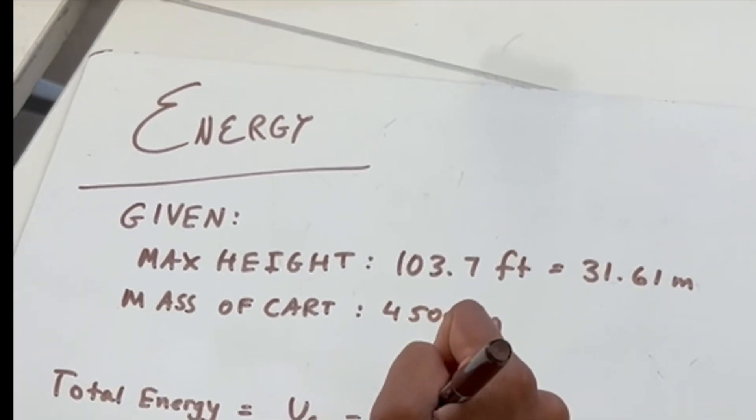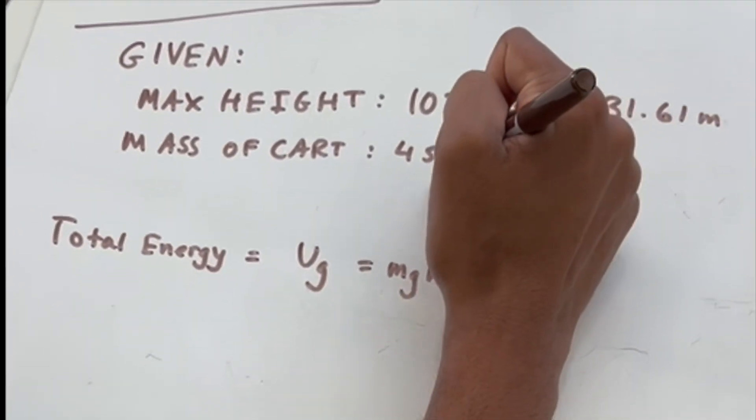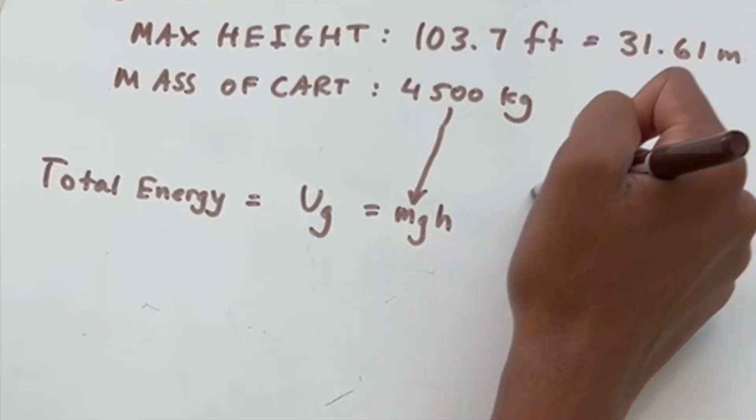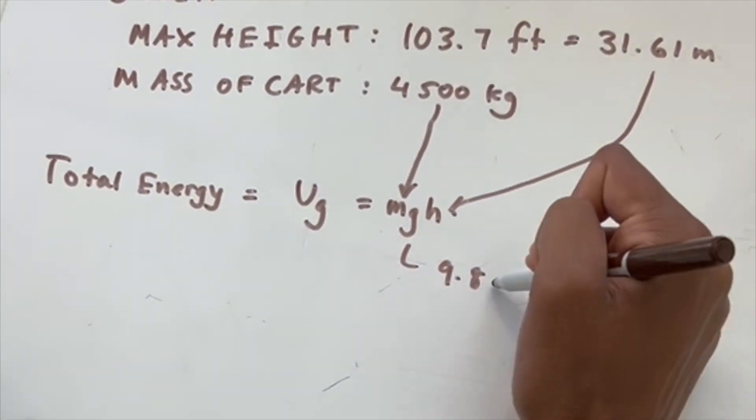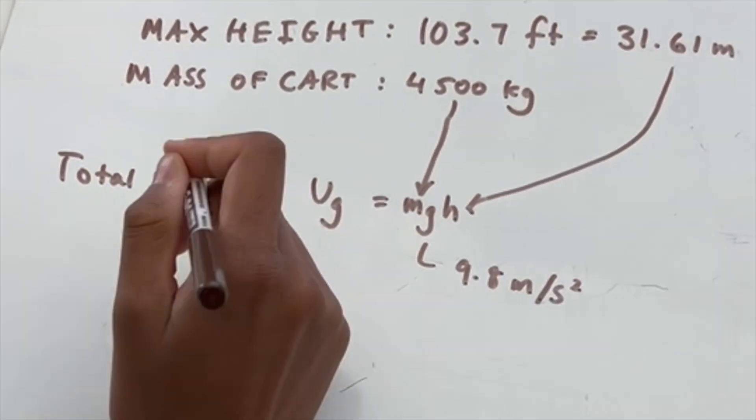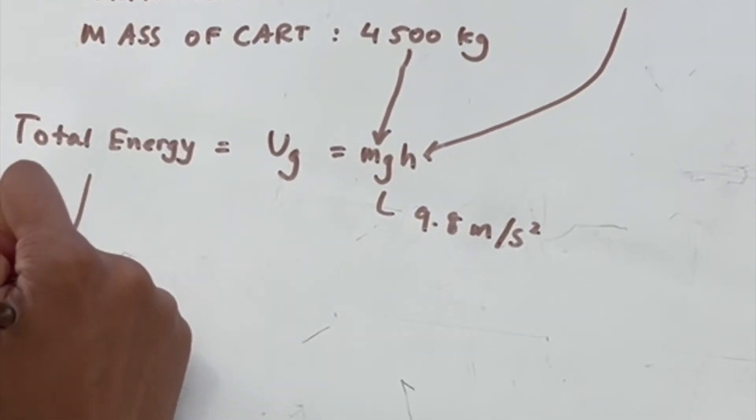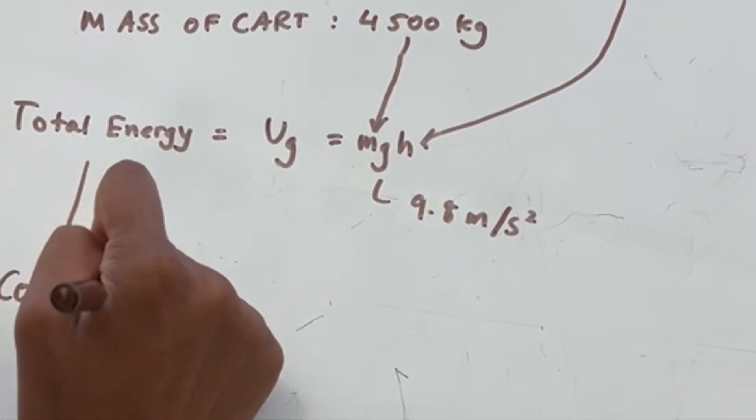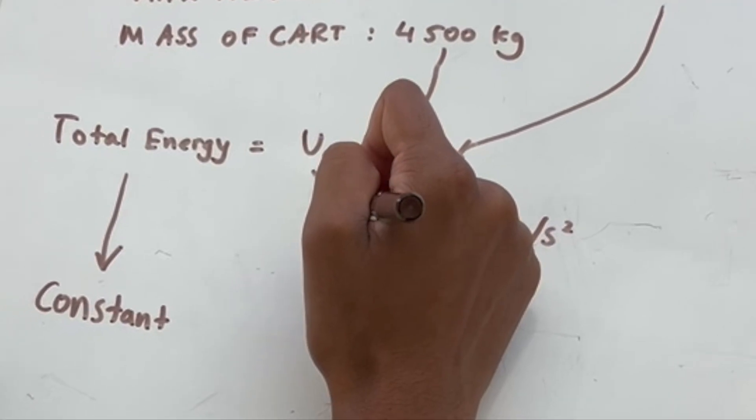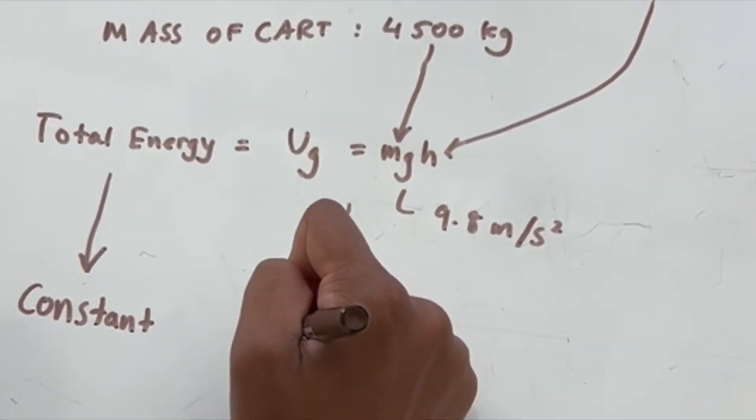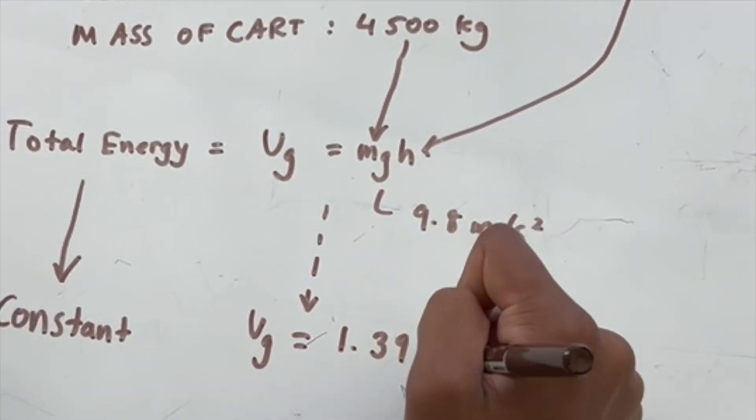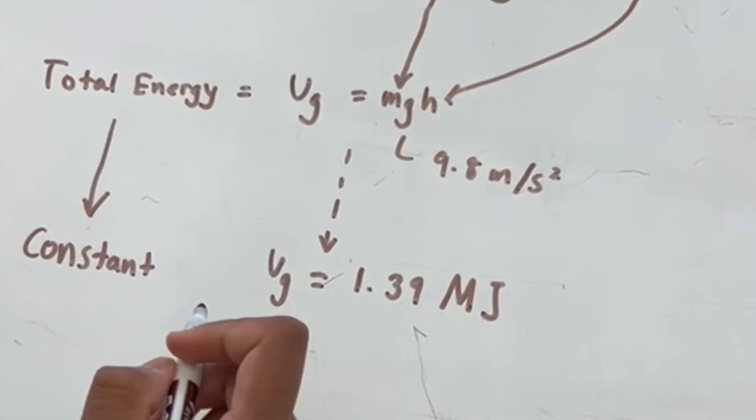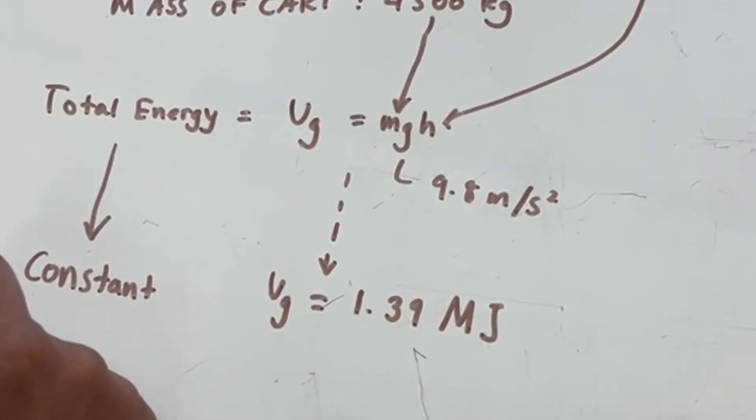So the total energy is equal to the gravitational potential energy at the top, or MGH. And we know that H is 31.61 meters, and the mass of the cart is 4,500 kilograms. Assuming that there is no friction between the rails and the cart, and also there is no air resistance, we can find the total energy as it is constant. This is equal to 1.39 MJ.